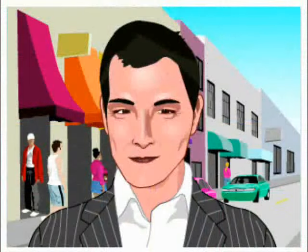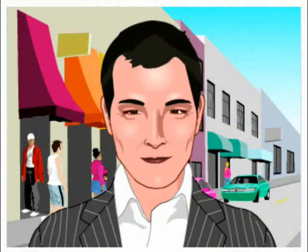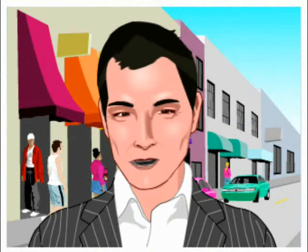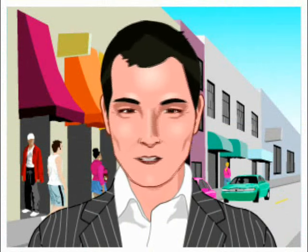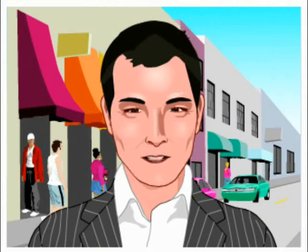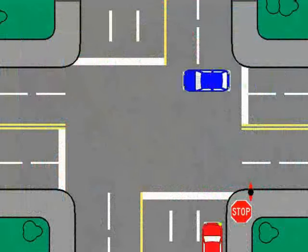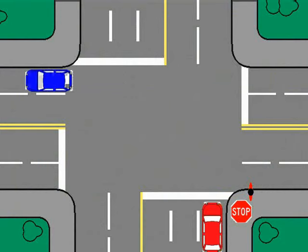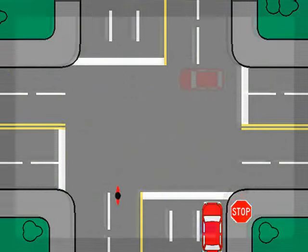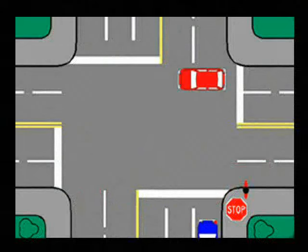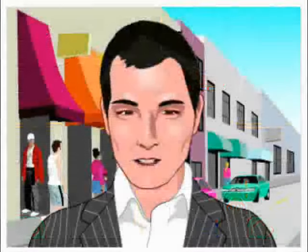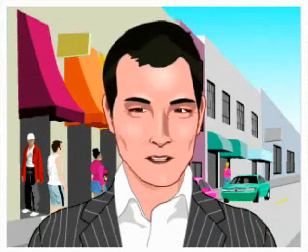Scenario one of nine. To make a right turn, you must signal your intention to make a right turn before approaching the intersection. Move into the lane closest to the right side of the road and come to a complete stop. Yield the right of way to pedestrians and other traffic. Make sure you check your blind spot before turning. Proceed into the right lane of the highway on which you wish to travel.